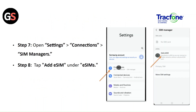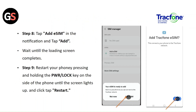Step 7: open Settings, then Cellular, then SIM Manager. Step 8: tap Add eSIM under the eSIM section. Step 9: tap Add eSIM in the notification and tap Add. Wait until the loading screen completes. Step 10: restart your phone by pressing and holding the power and lock key on the side of the phone until the screen lights up, then tap Restart.